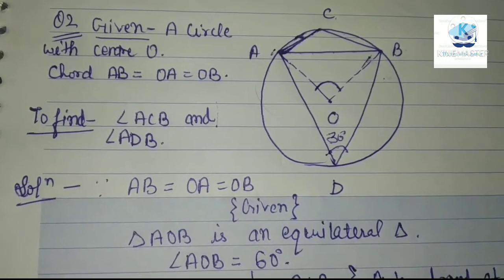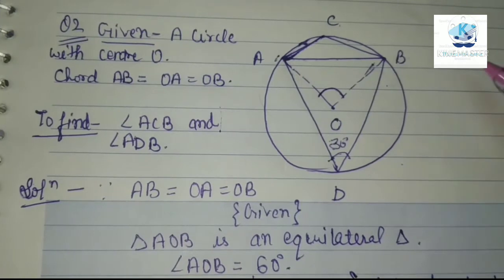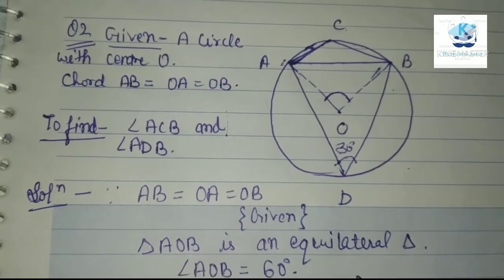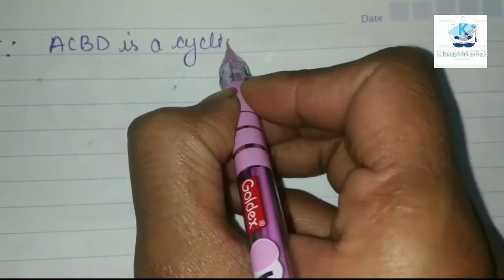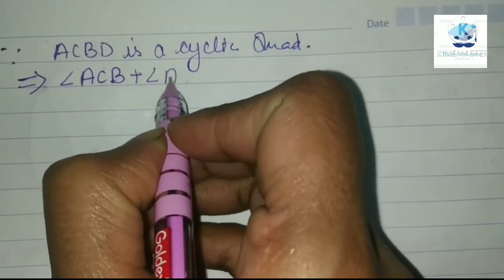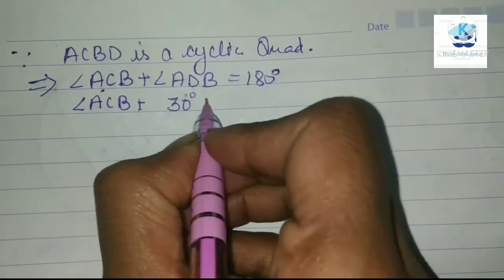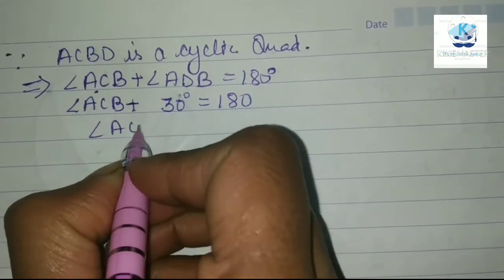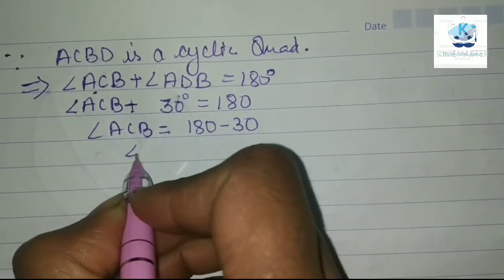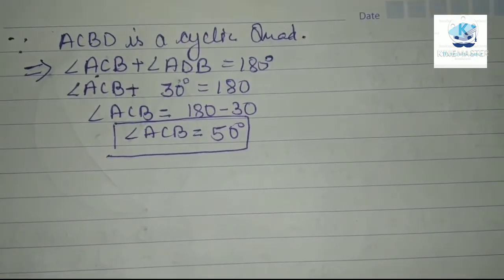Now A, C, B, D are four points on the circle, so ACBD is a cyclic quadrilateral. The sum of opposite angles of a cyclic quadrilateral is 180 degrees. So angle ACB plus angle ADB equals 180 degrees. Since ADB is 30 degrees, we get ACB equals 180 minus 30 equals 150 degrees. These were the two angles we needed to find. This completes Question 2.